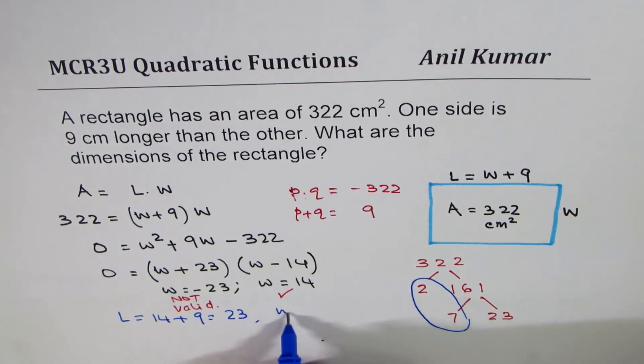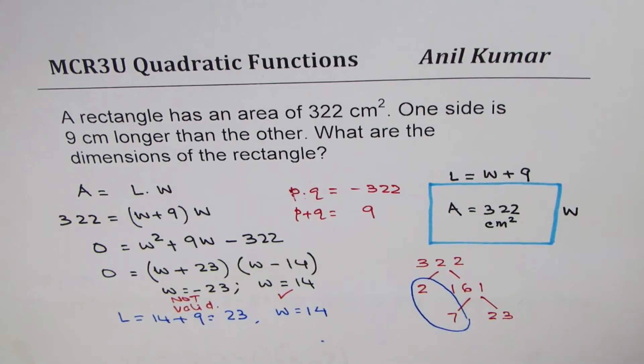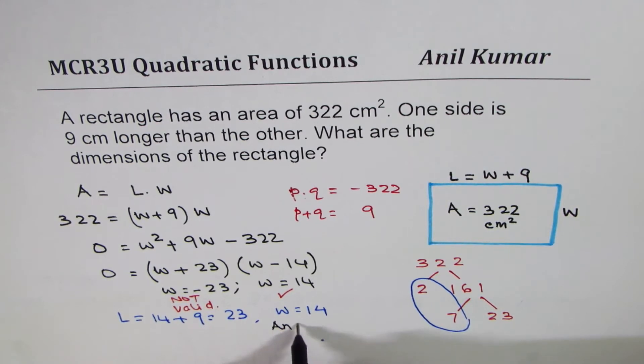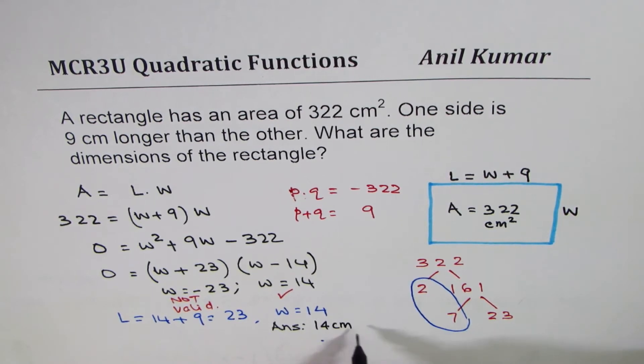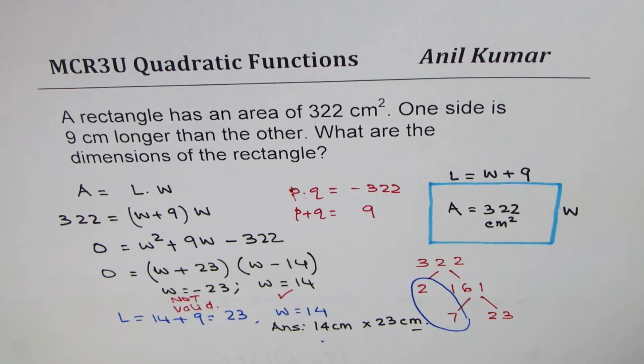Width is 14, so that becomes the dimensions for our rectangle. Our answer is: dimensions of the rectangle are 14 centimeters by 23 centimeters.